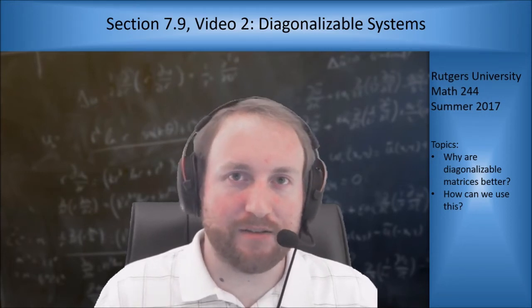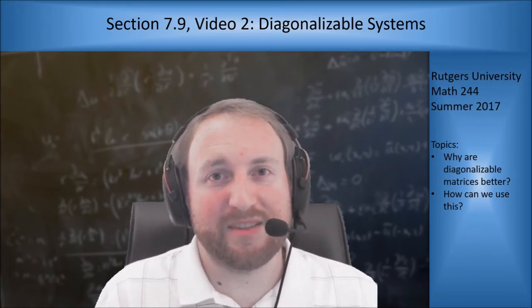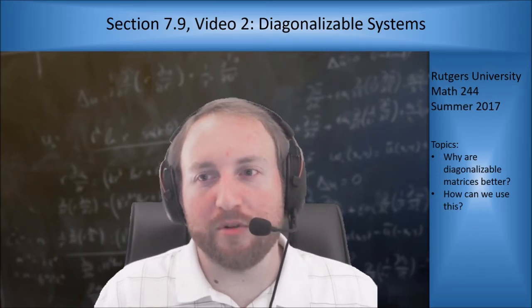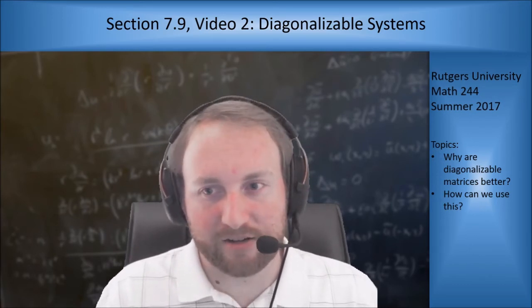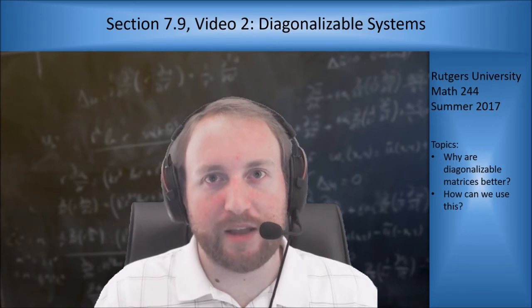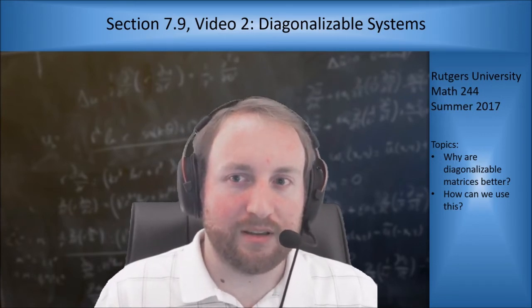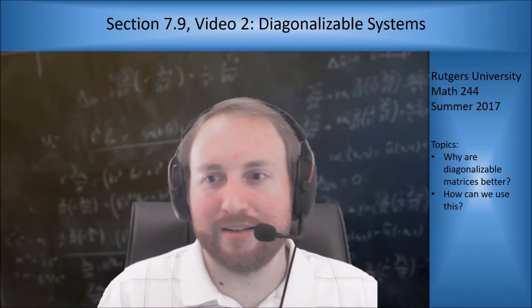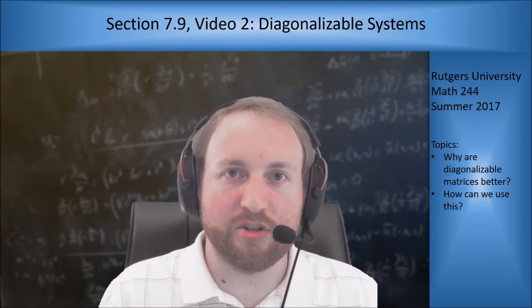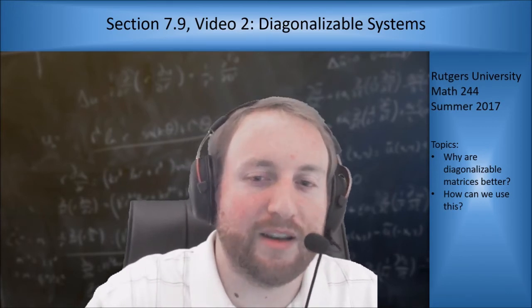So we hit that a little bit in section 7.7, where we saw how if a system is diagonalizable, it's easier to solve the homogeneous equation because you can just make it diagonal, solve the decoupled system, and then go back to the coupled case and solve for your x that you wanted from the beginning. Turns out you can do the same thing for non-homogeneous problems. Let's go ahead and start going into that.